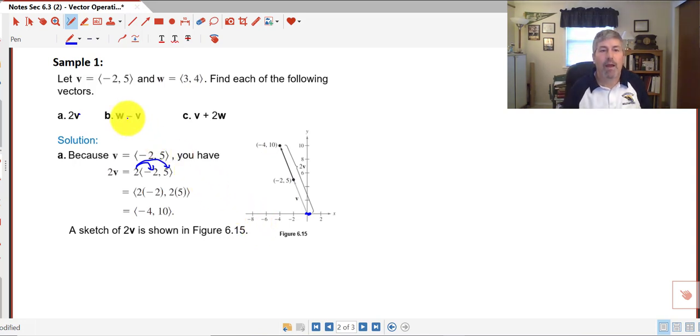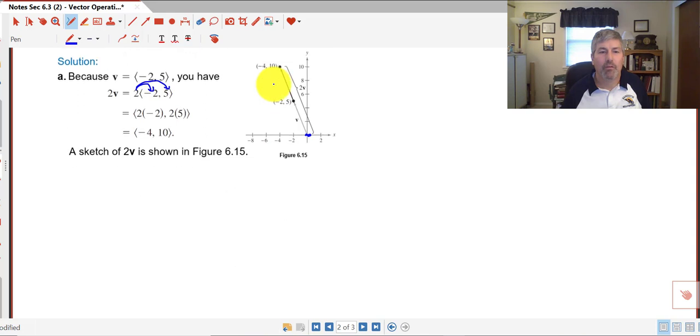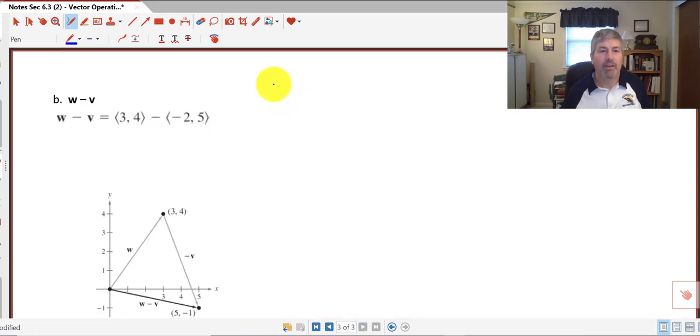In b, we're going to subtract w minus v. So when we do that, let's take a look. We'll have to drag these points with us. So the component form of w is 3, 4, and v, the component form, is negative 2, 5. So w minus v will become 3 minus a negative 2, and 4 minus 5. So we end up at the point 5, negative 1.